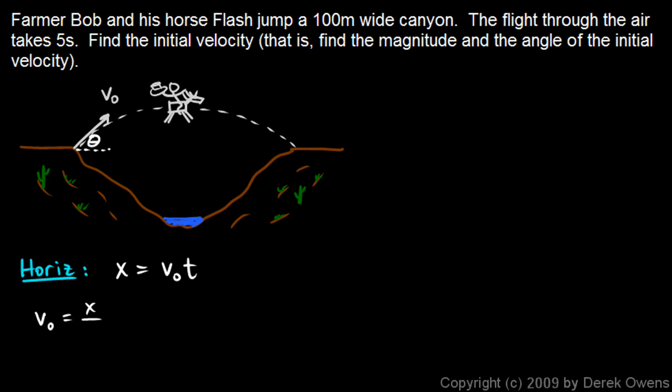And we can solve that for v0. v0 is x over t. That's 100 meters over 5 seconds. And that comes out to 20 meters per second. And you might think, hey, we're done. We just found v0. That's what we're supposed to find, the initial velocity.